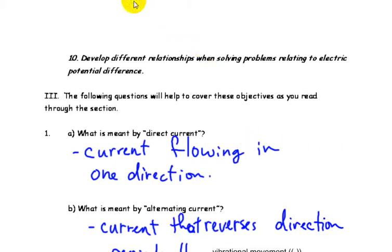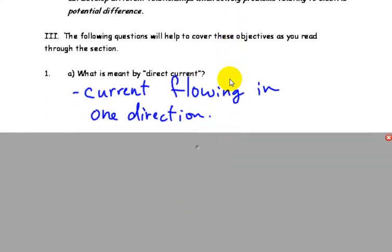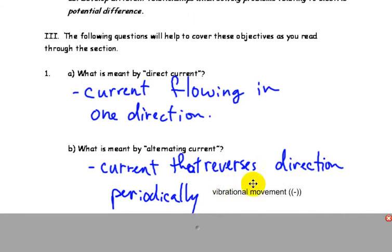So, first of all, going back, electric current. Direct current, current flowing in one direction, whereas alternating current is current that reverses direction periodically, or you can almost think of it as vibrating back and forth.